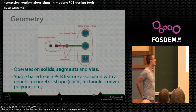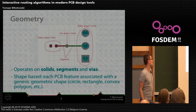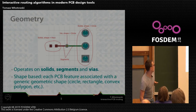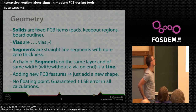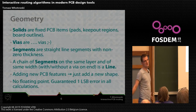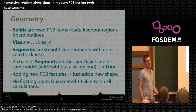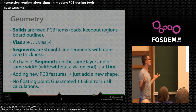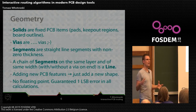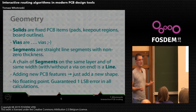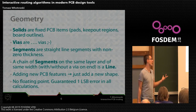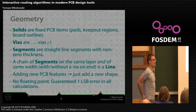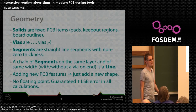Let's get into the technical stuff. Geometry: it's shape-based and operates on simple geometric primitives. The three item types the router uses are called solids, segments, and vias. Solids are fixed PCB items such as pads, keep-out areas, or board outlines. Vias are just vias. Segments are simple straight line segments of non-zero thickness connecting two points in board space. For the push and shove algorithm we have yet another item — a chain of segments on the same layer of the same width, ending at two different points, not forming a loop, possibly with a via at an end — and I will call it a line. This shape-based approach lets us add new PCB graphical features just by adding new shapes.